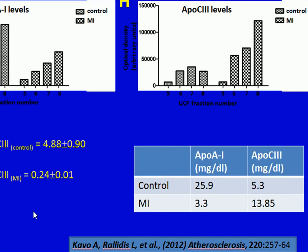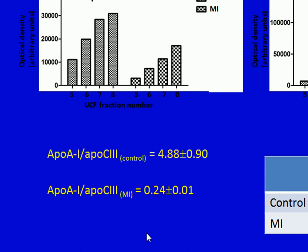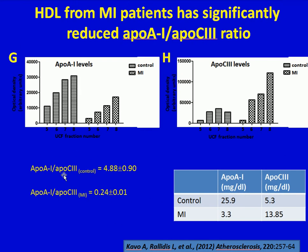Indeed, when we calculated the ApoA1 to ApoC3 concentration ratio in HDL, we found that while in the control group this ratio was 4.88, in the group of patients who suffered an acute myocardial infarction it decreased drastically to only 0.24, suggesting that measurable changes in apolipoprotein proteins may be correlating with changes in the function of HDL.